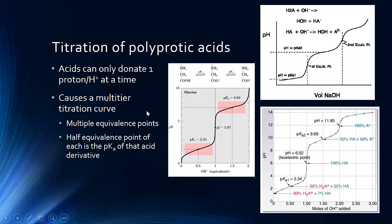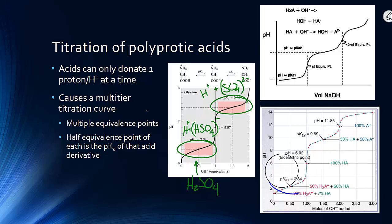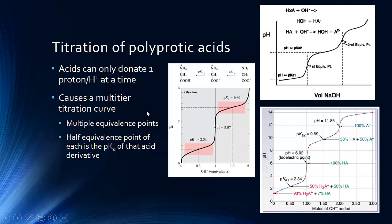If you are doing a titration of a polyprotic acid or base, you will end up with multiple curves. The first curve corresponds to when the first hydrogen ion or hydroxide is released — for example, sulfuric acid's first hydrogen leaving the bisulfate anion — and a second curve when the second hydrogen leaves the sulfate ion. Polyprotic acids and bases therefore have multiple equivalency points and multiple half-equivalency points within a single titration, and therefore different Ka values and pKa values. Most of the time we focus on the first curve, but be aware that multiple curves do exist.